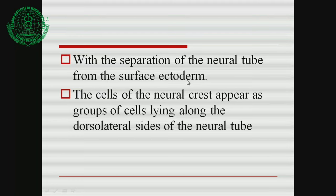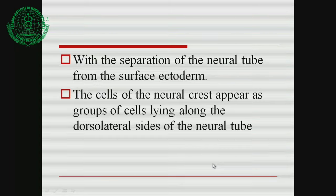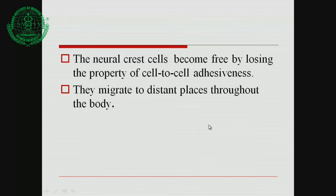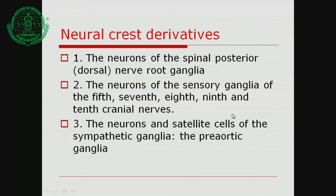Neural crest cells become free by losing cell-to-cell cohesiveness and migrate to different places throughout the body. Their derivatives are scattered throughout the body, forming parts of the nervous system, peripheral nervous system, ganglia, and other structures. These are the embryonic derivatives of the neural crest cells.